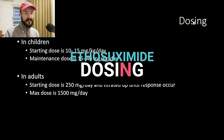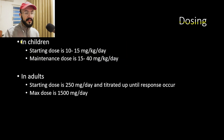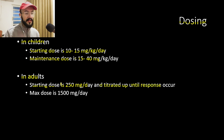Regarding dosing, in children the starting dose is 10 to 15 milligrams per kilogram per day, and the maintenance dose can range from 15 to 40 milligrams per kilogram per day depending on the response. In adults, the starting dose is 250 milligrams per day, titrated up until response occurs, with a maximum dose of 1500 milligrams per day.